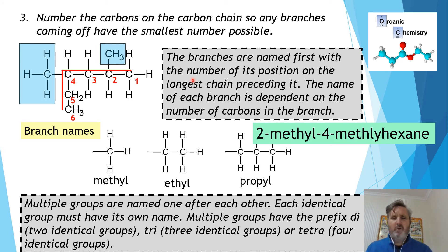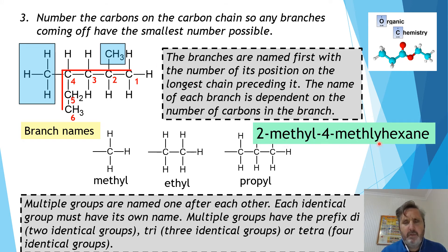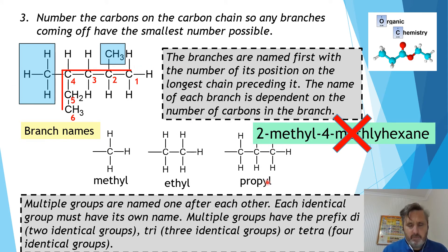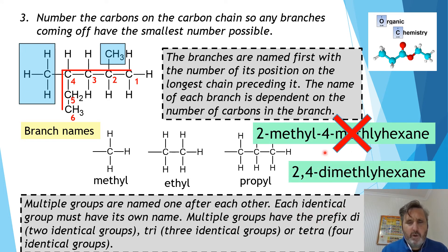However, that's considered bad form because we write 'methyl' twice. Chemists always want to find an easier way. So whenever we have two groups that are identical, instead of writing the name twice we put a prefix in front — in this case 'di', meaning two. So we write 2,4-dimethylhexane. That's how we name that molecule.